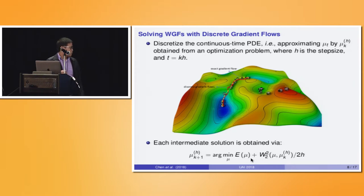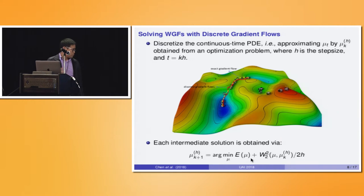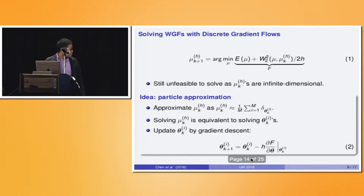The problem is how to define these intermediate points. Previous theory shows this can be done by solving an optimization problem: mu_{k+1} is the minimizer of two terms — the energy term, and the second-order Wasserstein distance between mu and the previous point. However, this optimization problem is still infeasible because mu_K is an infinite-dimensional object.